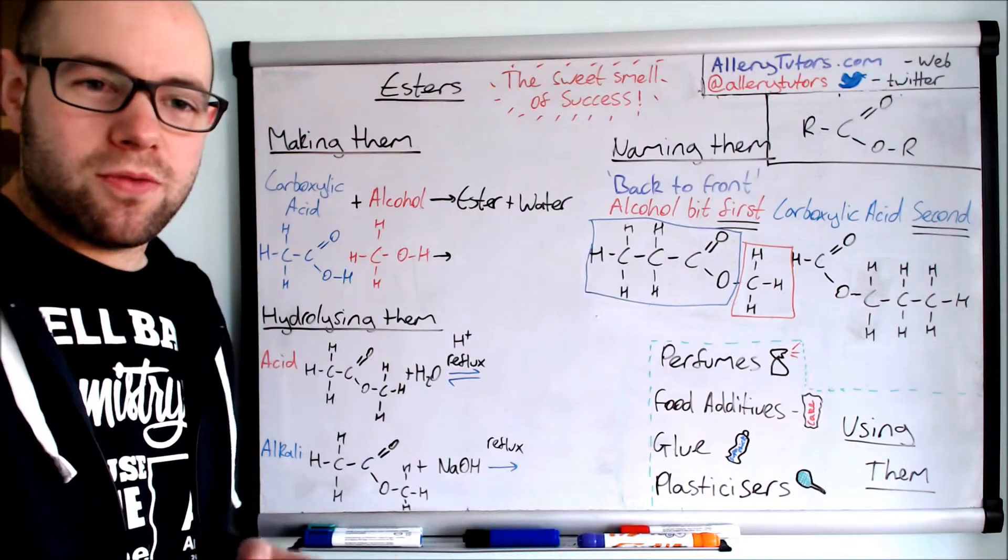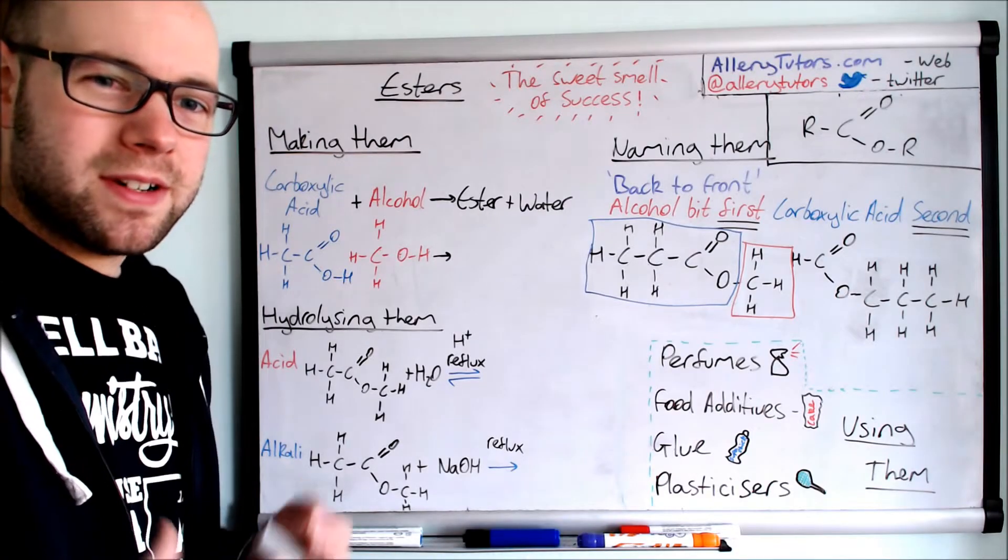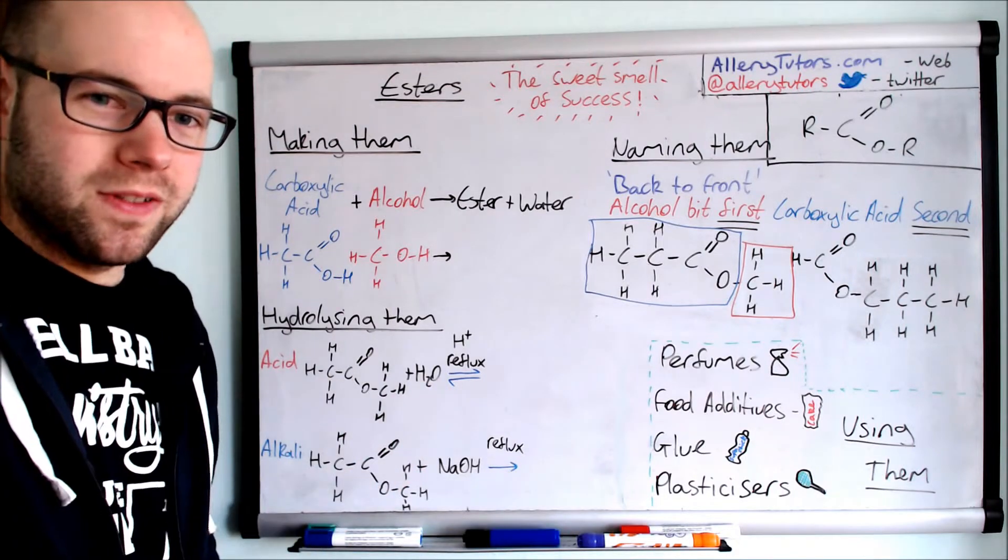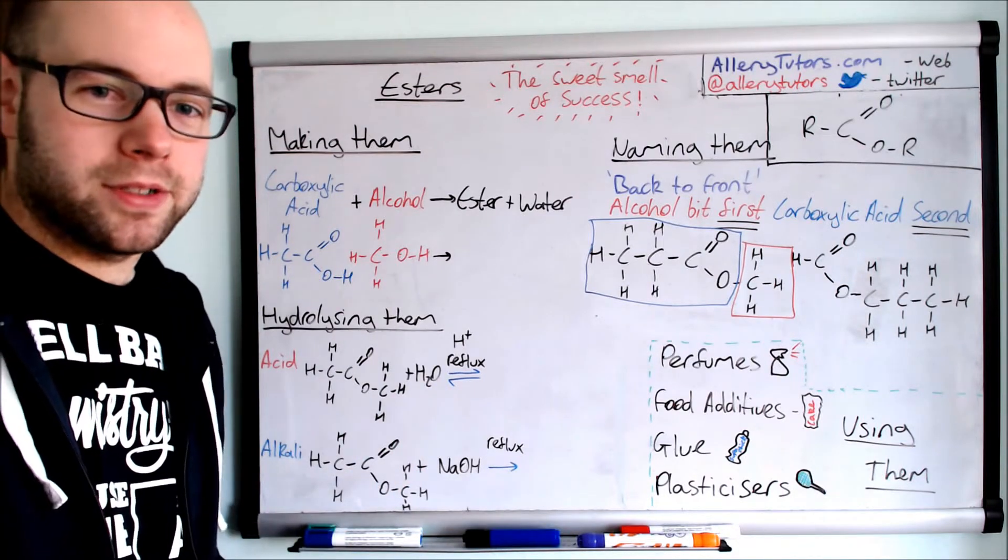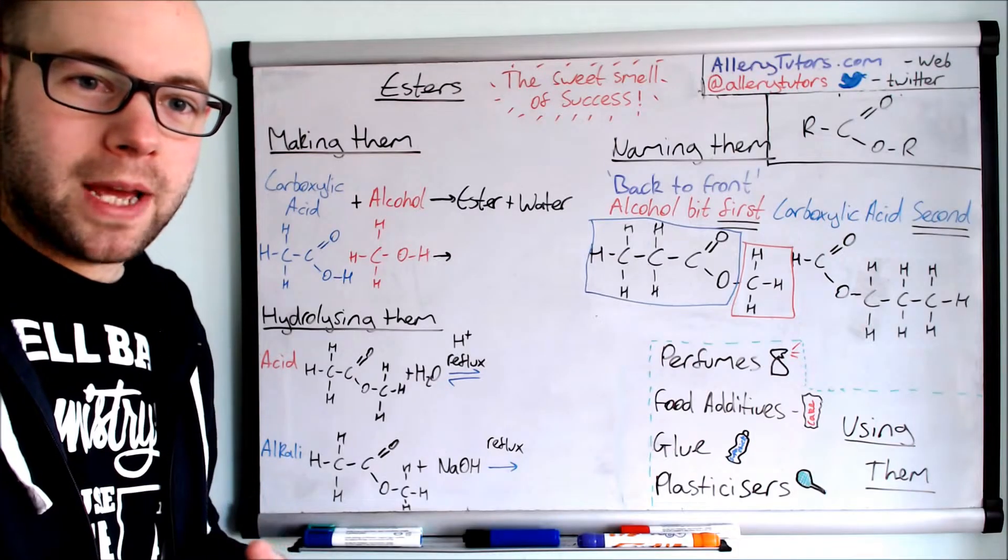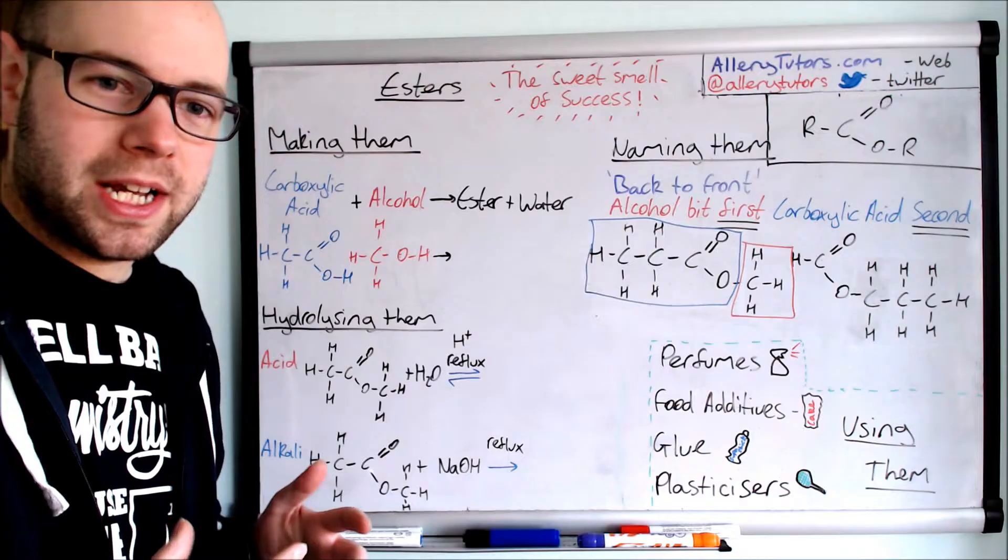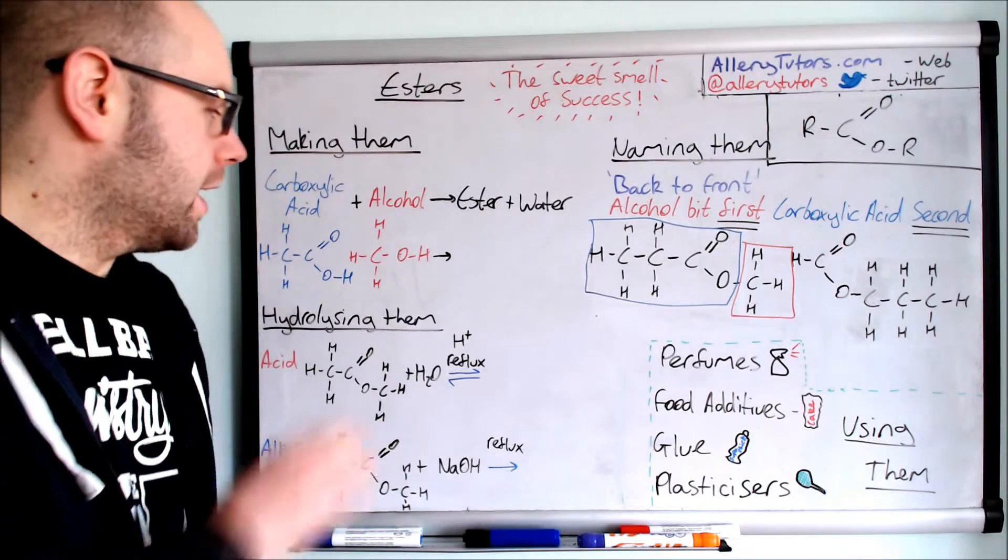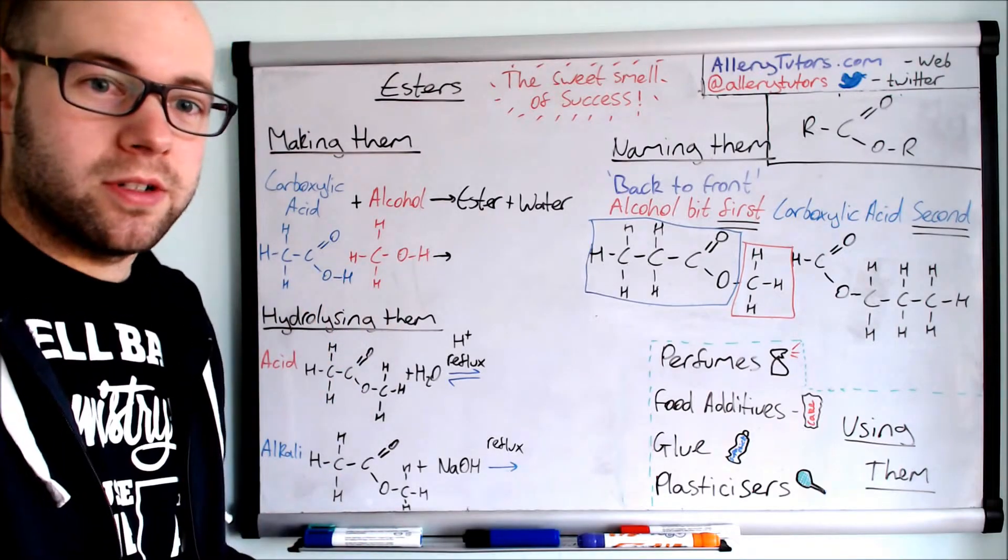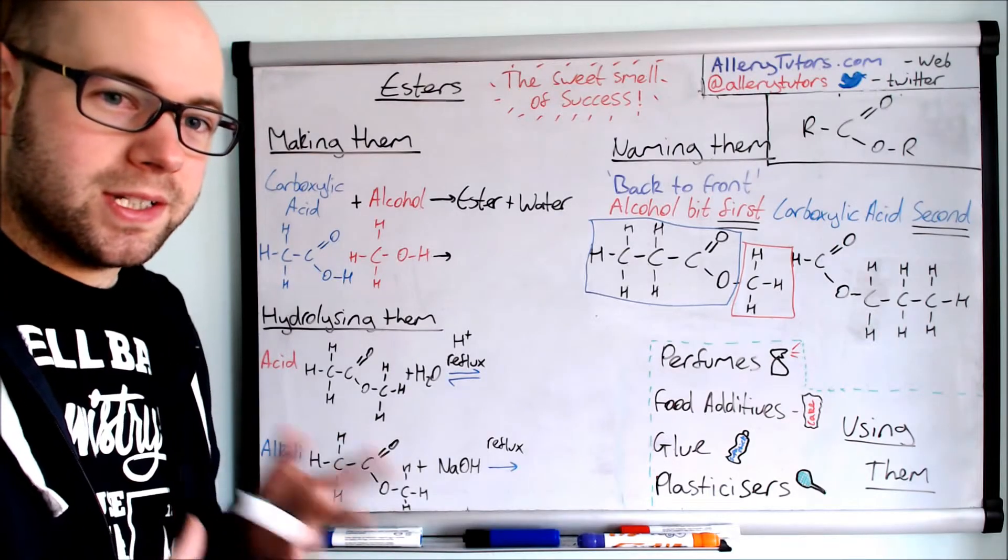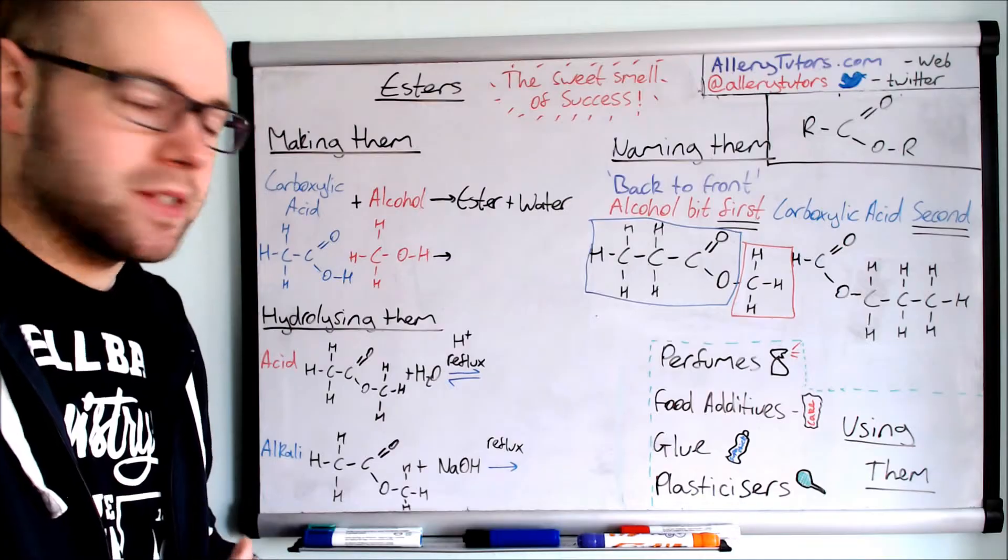Esters are a group of chemicals that have very distinctive smells, both good and bad, and we'll look at the uses of them later on because they're incredibly useful chemicals. But firstly we need to know how we're going to make them, and we make them in a really simple way. We just use a carboxylic acid and an alcohol, and I've drawn them up here and I've actually colour-coded them. So all the acids will be in blue and all the alcohols will be in red, so you can see really easily where each bit has come from.